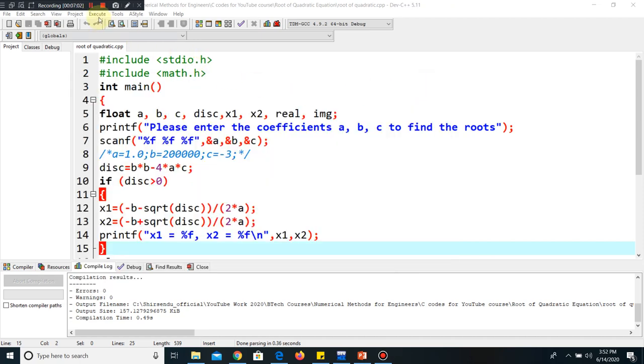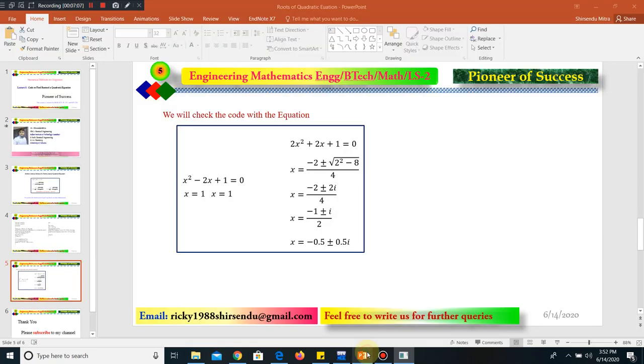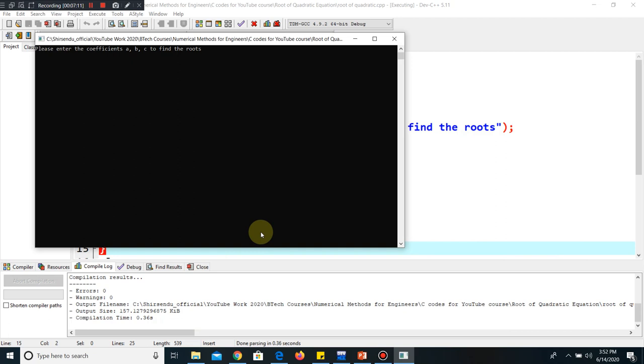We go to the next one. We again compile. Now we have taken 2, 2, 1. So we put 2, 2, 1. Now it is coming as -0.5 + i × 0.5 and the other is -0.5 - i × 0.5.